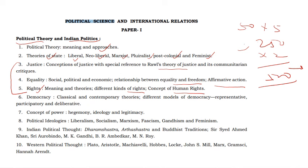Human rights is a whole system, and democracy also includes classical and contemporary theories — classical Athenian or Indian literary, Buddhist democracy called Sangha, contemporary theories like liberal democracy and representative democracy. Different models of democracy: participatory and deliberative democracy. The concept of power — without power, politics has no meaning. Power and interest are two pillars of politics. Concept of power, hegemony, ideology and legitimacy. Different political ideologies: liberalism, socialism, Marxism, fascism, Gandhism and feminism.